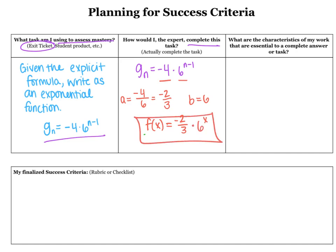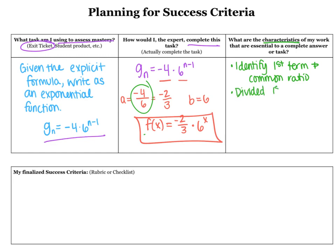There is my answer. My next step is, once I've completed the task, I'm going to look for the characteristics of my work that are essential to a complete answer. In math, it ends up being those steps — that process we went through. So specifically, the first thing I had to do was identify my first term and common ratio. And then I divided and simplified — divided the first term...